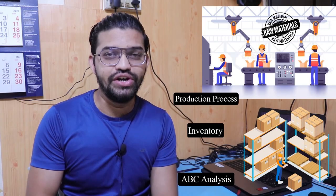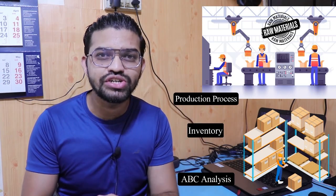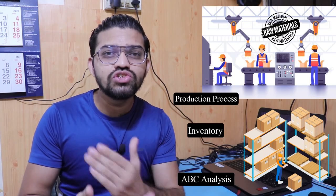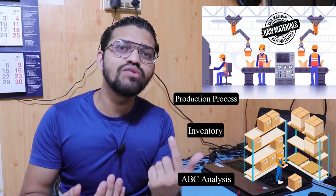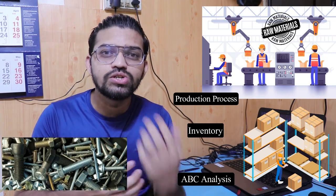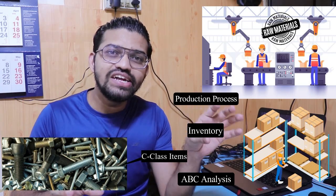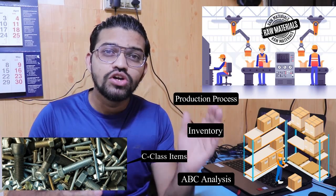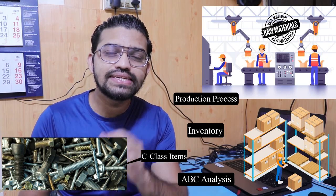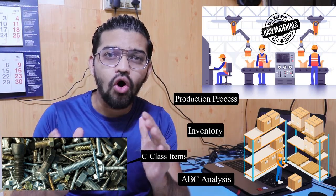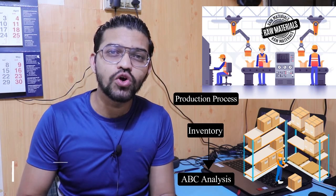In ABC analysis, categorization of raw materials and inventory is carried out in order to control the inventory. When a product is manufactured, a list of various items is required — these can be equipment, instruments, or utility items such as fasteners, stud bolts, and rivets. To get the desired final product, you need certain inventory, which gets controlled through this statistical approach known as ABC analysis.